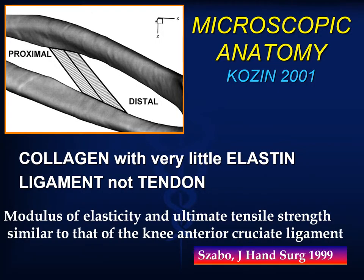Microscopic studies have confirmed that the makeup of the central band is ligamentous in nature with very little elastin and far different from tendon tissue. Biomechanical studies have correlated its modulus of elasticity and tensile strength as similar to that of the anterior cruciate ligament of the knee.